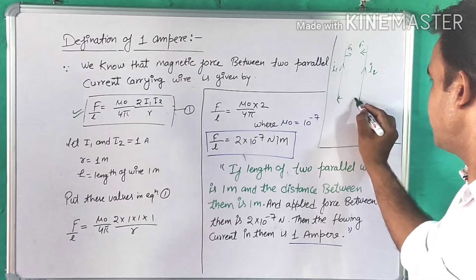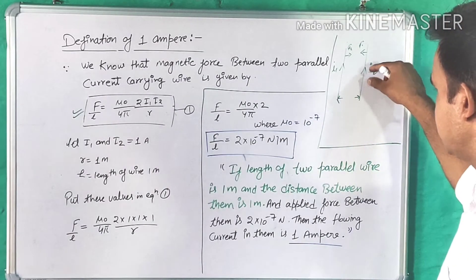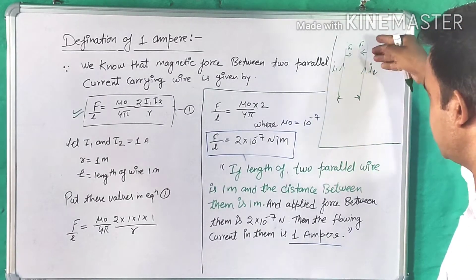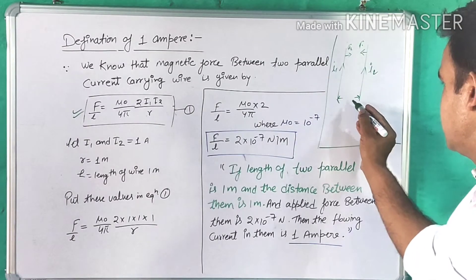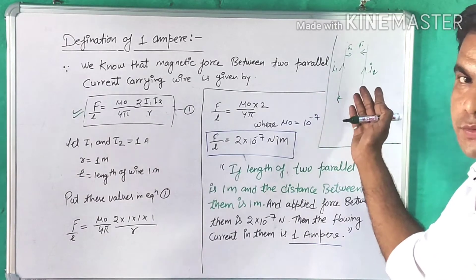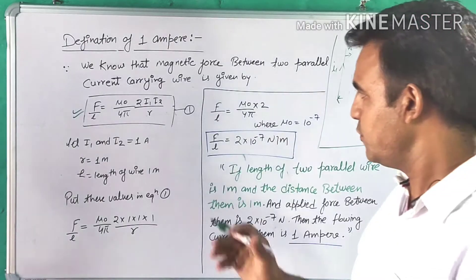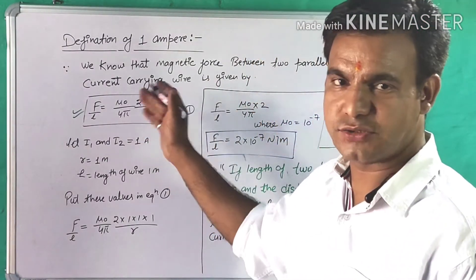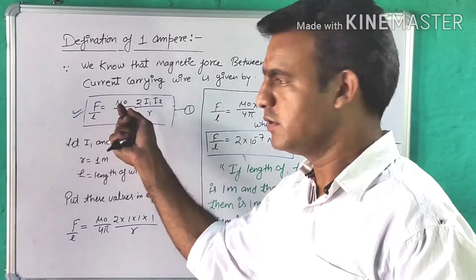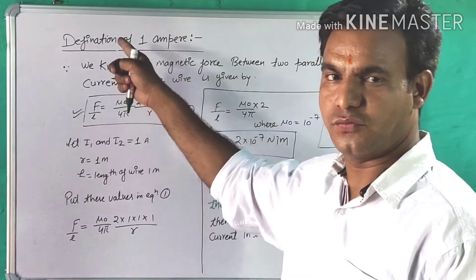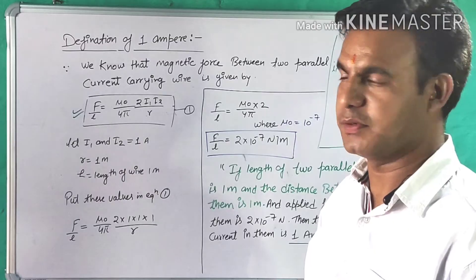So what is the nature of force? The force will be attractive in nature when the directions of current are the same. And when the directions of current are opposite, the nature of force will be repulsive. So in this topic — the definition of 1 ampere — we have used this formula to define 1 ampere.